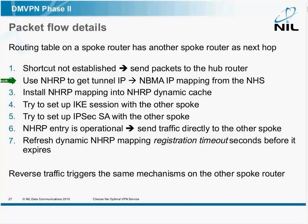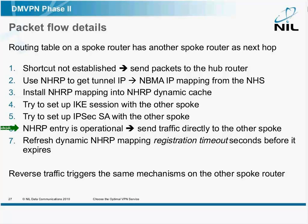Then, as the packets start to flow, the spoke router tries to set up a shortcut. It uses NHRP and asks the hub router what the IP address of the other spoke is. As it gets a reply, it installs the mapping for the other spoke into its dynamic cache. Then it tries to set up the IPSec session with the other spoke to exchange the keys. And when the IPSec session is up, the NHRP entry becomes operational.